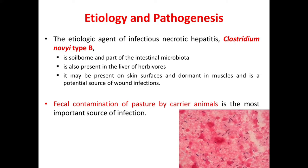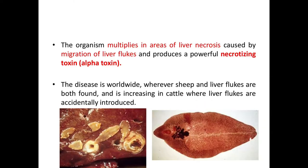You can see the picture of Clostridium novyi type B here. Fecal contamination of pasture by carrier animals is the most important source of infection. The organism multiplies in the area of liver necrosis caused by migration of liver flukes and produces a powerful necrotizing toxin called alpha toxin. The disease is worldwide wherever sheep and liver flukes are both found and is increasing in cattle where liver flukes are accidentally introduced.